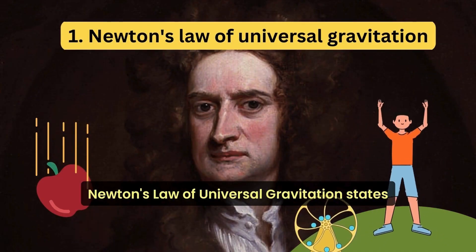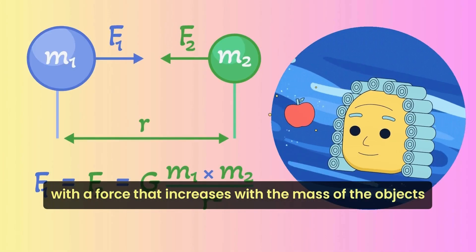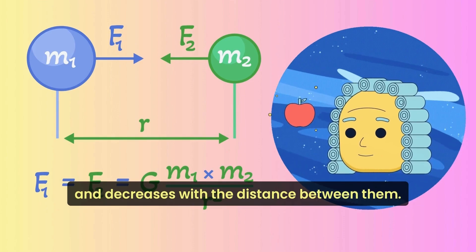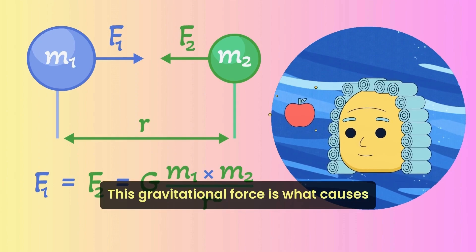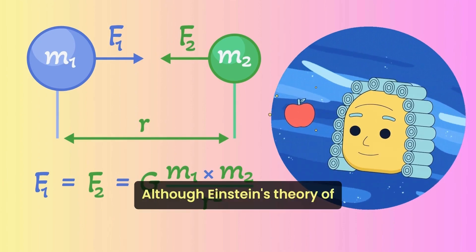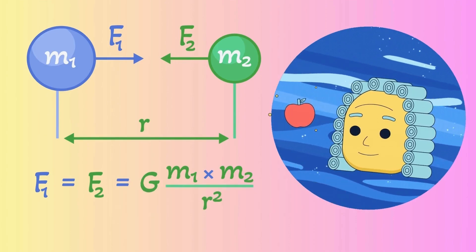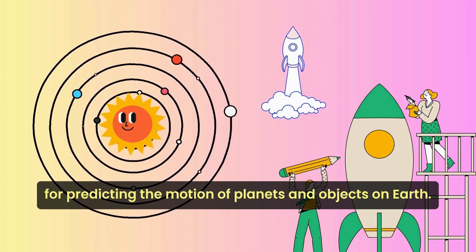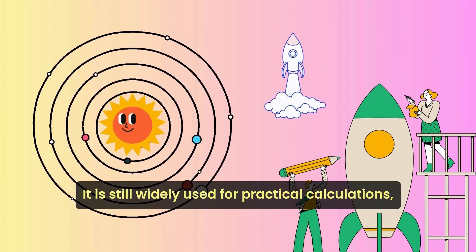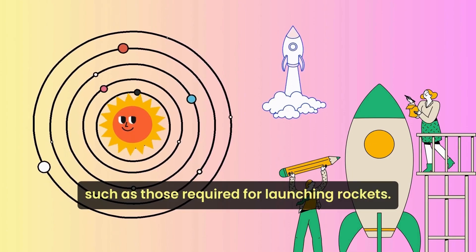Newton's Law of Universal Gravitation states that every object in the universe attracts every other object with a force that increases with the mass of the objects and decreases with the distance between them. This gravitational force is what causes objects to fall to the ground. Although Einstein's theory of general relativity has superseded it, Newton's Law remains highly effective for predicting the motion of planets and objects on Earth, and is still widely used for practical calculations such as those required for launching rockets.